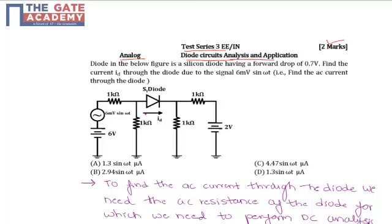This is the given circuit. This is the silicon diode and it is connected with two resistances 1 kilohm and 1 kilohm, with this source of 6 millivolts sin omega t and supply voltage of 6 volts.